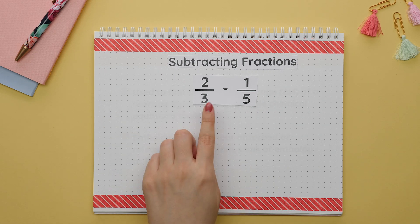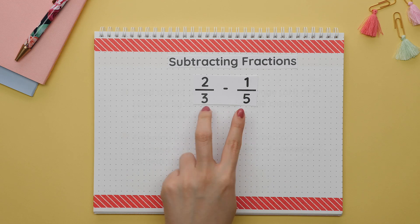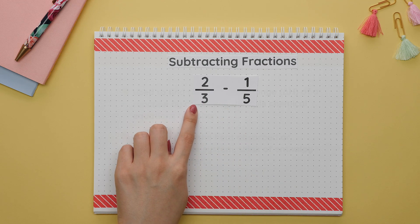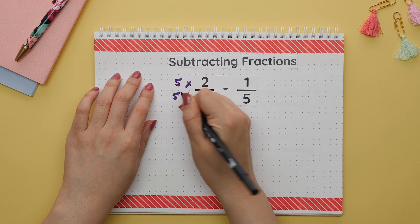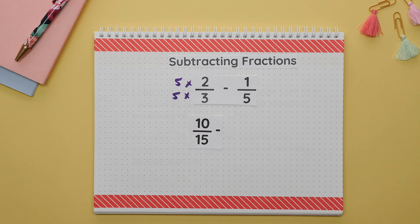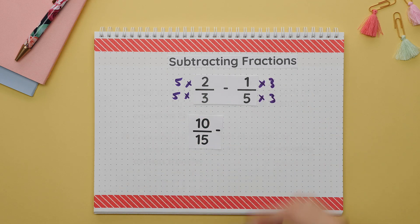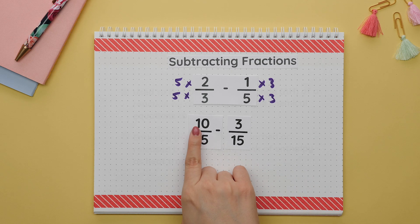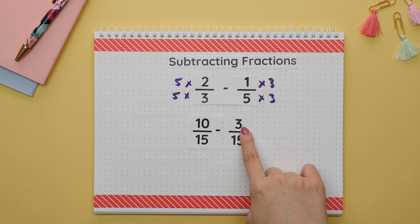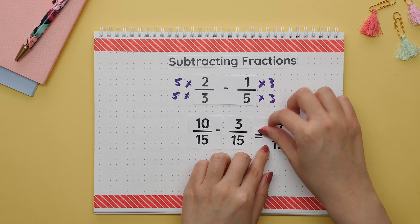We multiply each fraction by the number needed to reach a denominator of 15. The first fraction is multiplied by 5 on both numerator and denominator to get our new fraction, and the second fraction is multiplied by 3 on both numerator and denominator. Now that both fractions share a common denominator, we subtract only the numerators while the denominator stays the same as 15.